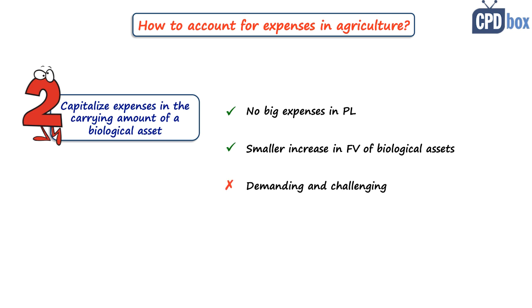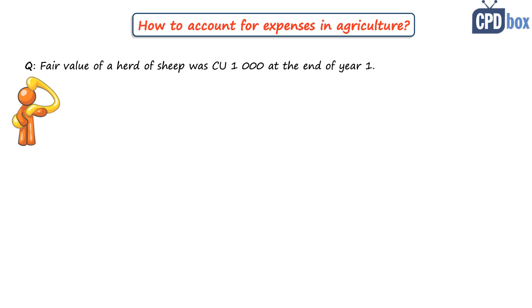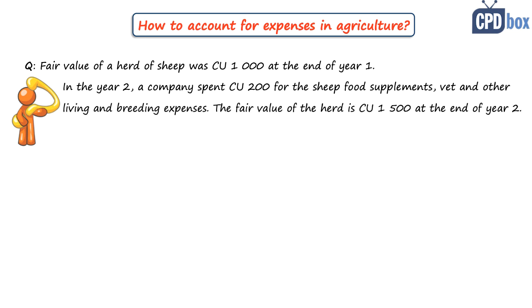Let me illustrate and compare with an example. Say the fair value of your herd of sheep was 1,000 currency units at the end of year one. In year two you spent 200 currency units for sheep food, supplements, vet, and other living and breeding expenses, and the fair value of your herd is 1,500 at the end of year two.